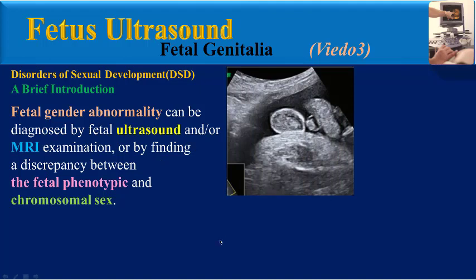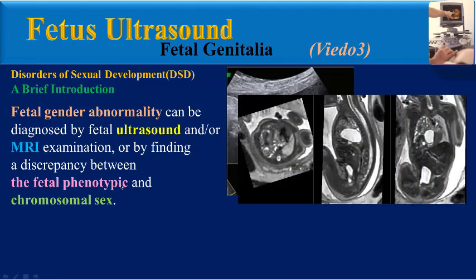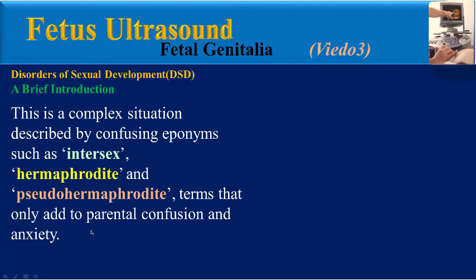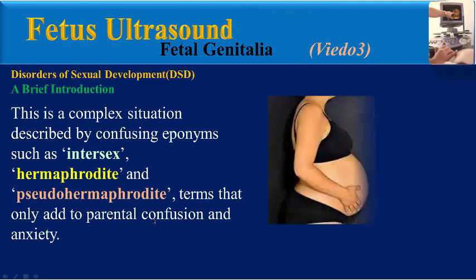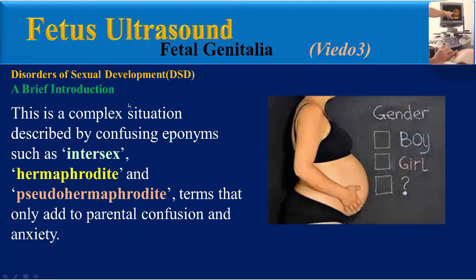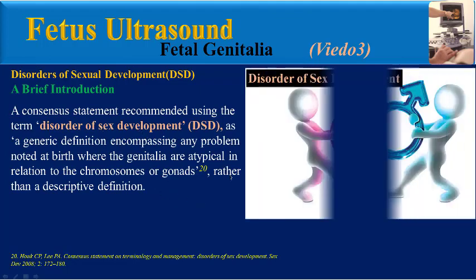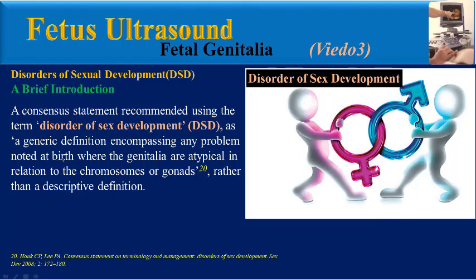Fetal gender abnormality can be diagnosed by fetal ultrasound and/or MRI examination, or by finding a discrepancy between the fetal phenotypic and chromosomal sex. This is a complex situation described by confusing eponyms such as intersex, hermaphrodite, and pseudo-hermaphrodite — terms that only add to parental confusion and anxiety. A consensus statement recommended using the term 'disorder of sex development' as a generic definition.